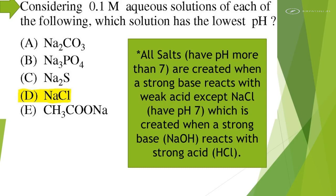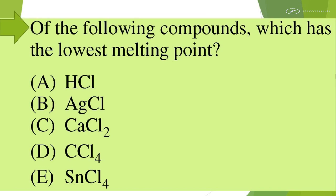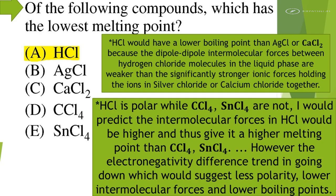Of the following compounds which has the lowest melting point? HCl would have a lower boiling point than silver chloride or calcium chloride because the dipole-dipole intermolecular forces between hydrogen chloride molecules in the liquid phase are weaker than the significantly stronger ionic forces holding the ions in silver chloride or calcium chloride together.